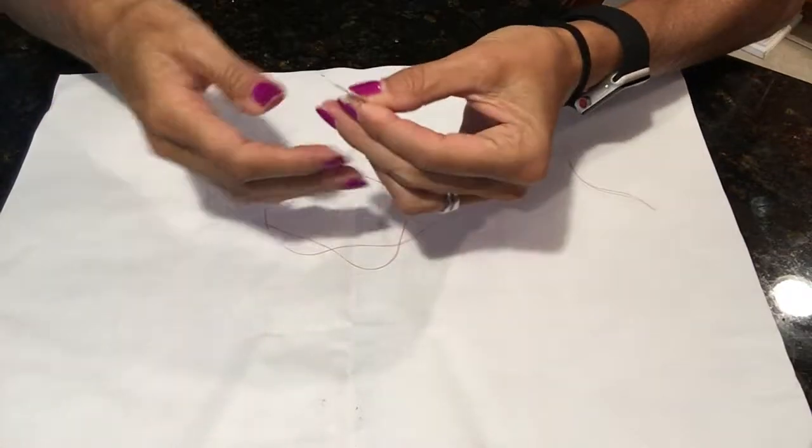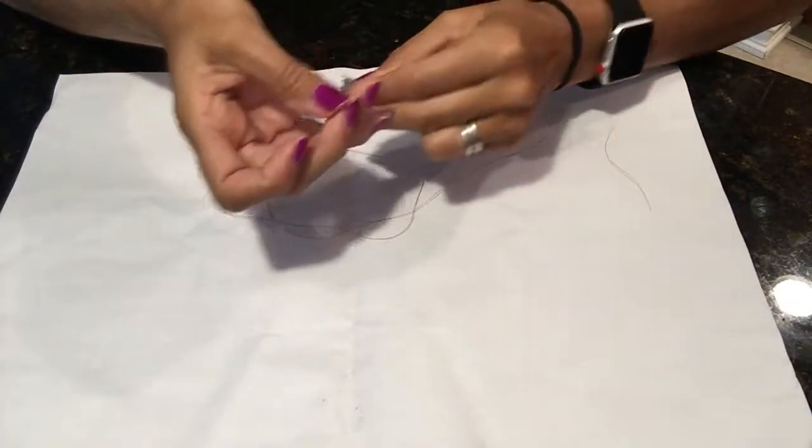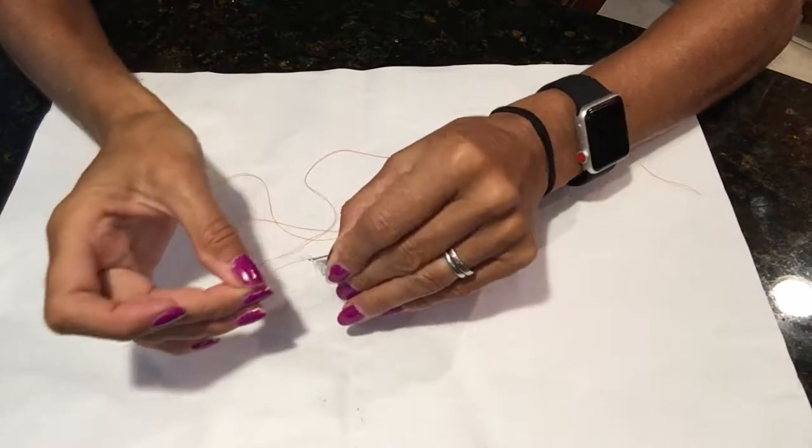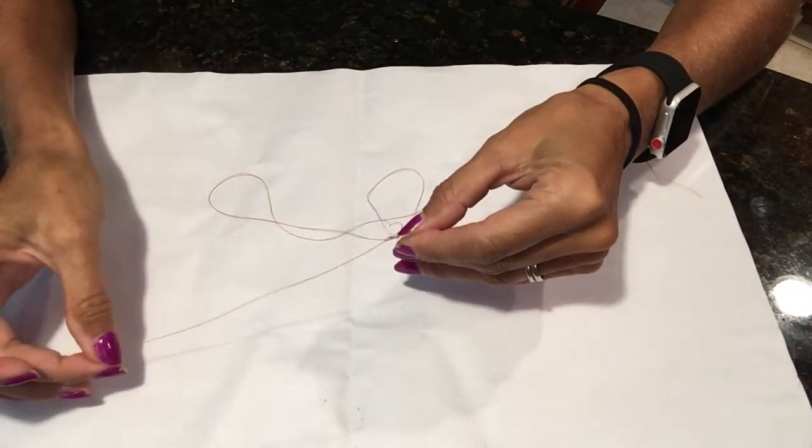You will then take your piece of thread and put that through the triangular shape, going about two or three inches.